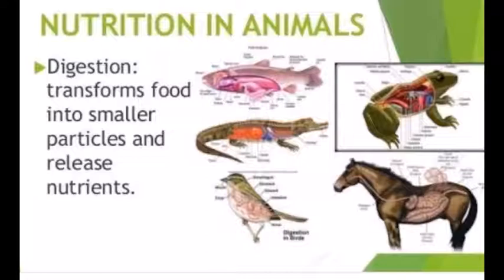Saprotrophic nutrition: any organism that obtains nutrients by absorbing dead organic matter is called a saprotroph. Bacteria and fungi have this type of nutrition. In parasitic nutrition, the organism derives food from the body of another living organism — called the host — staying inside it and getting nutrients from it. This organism is called a parasite.